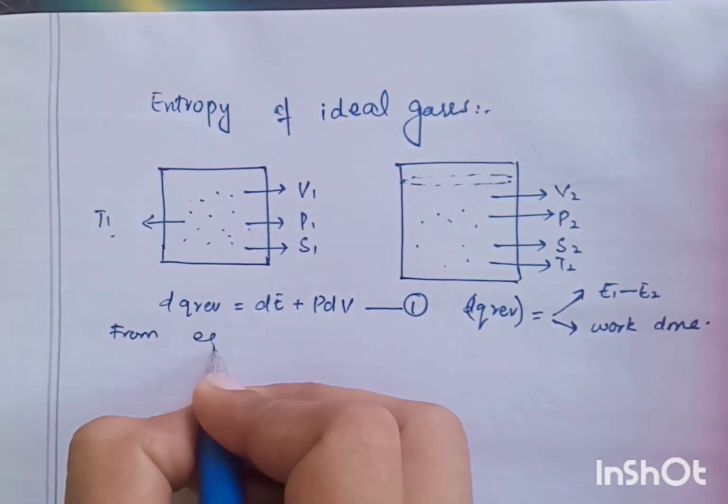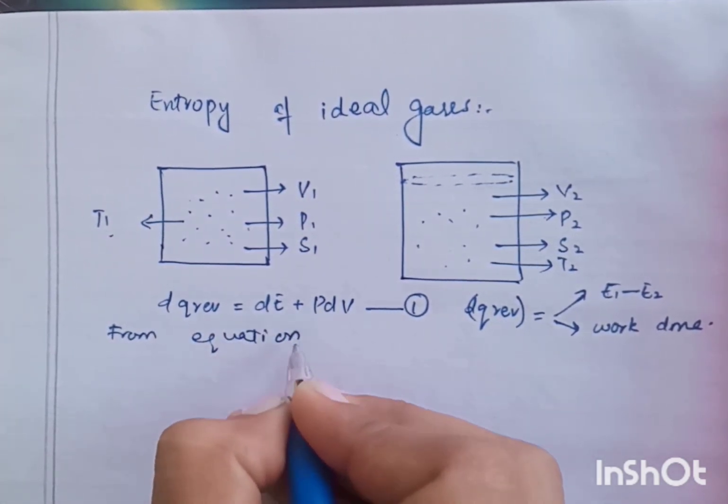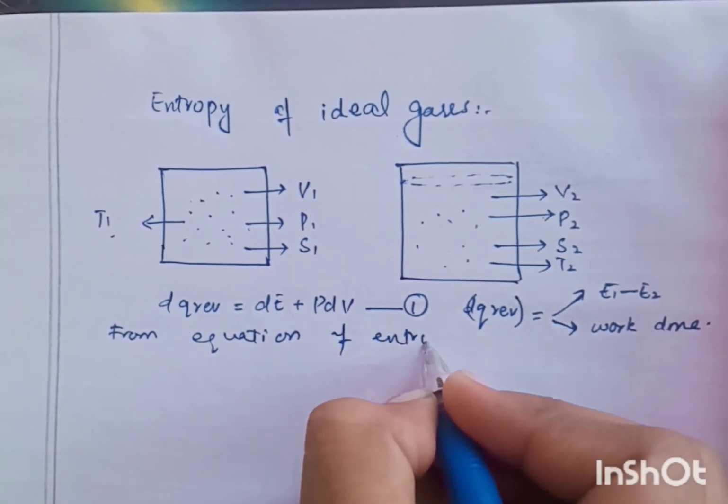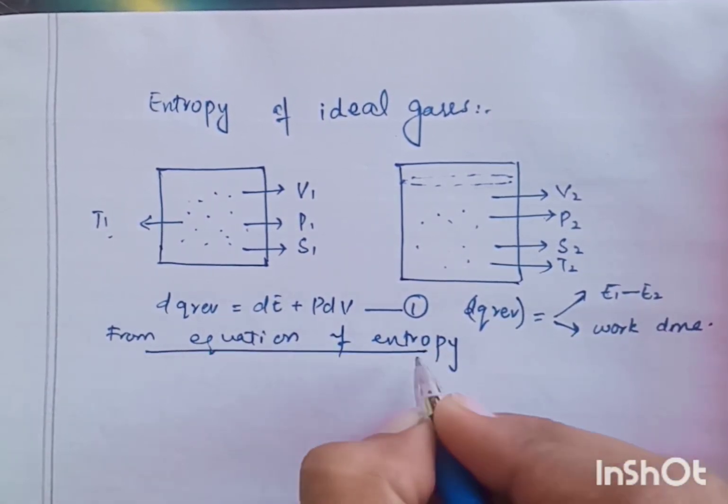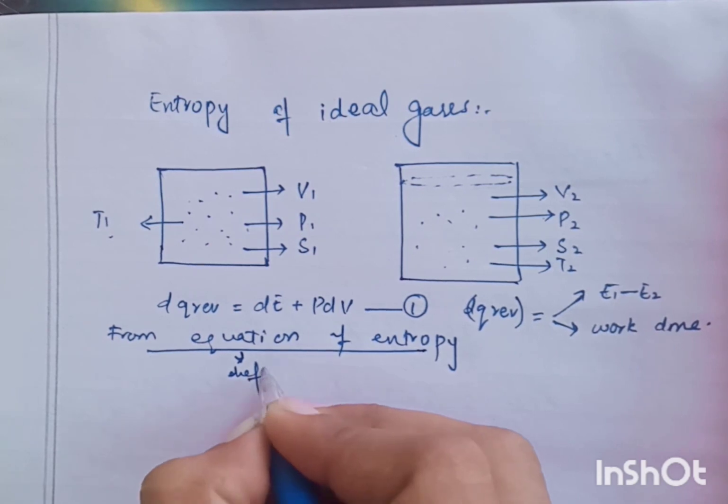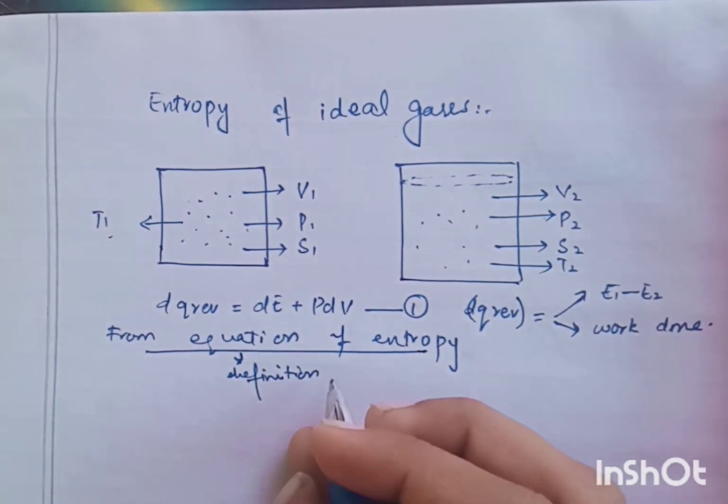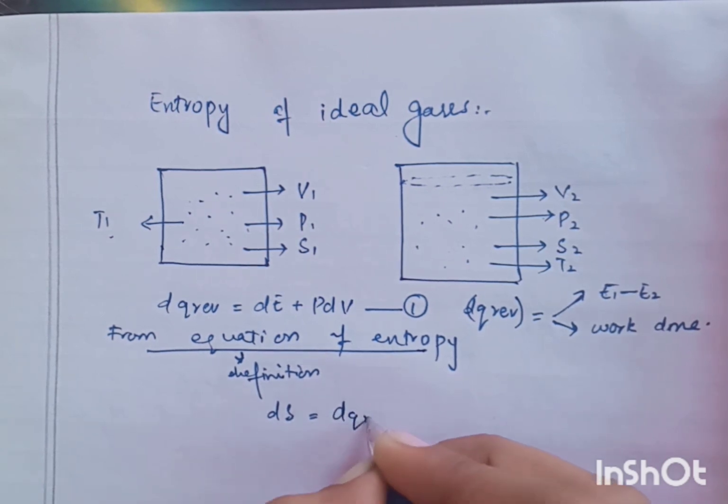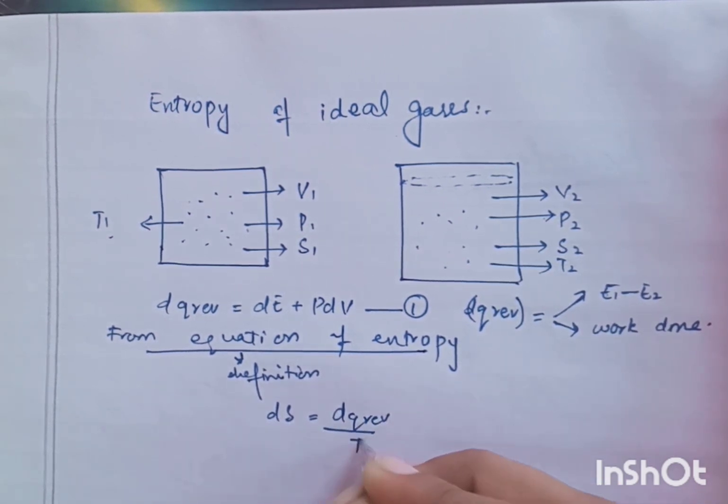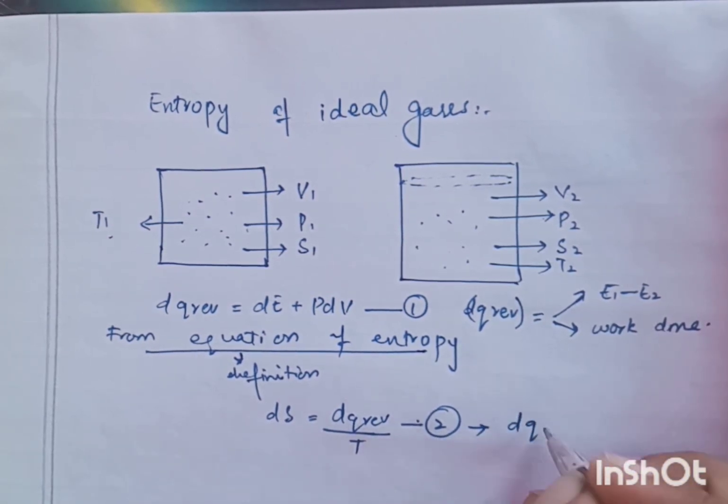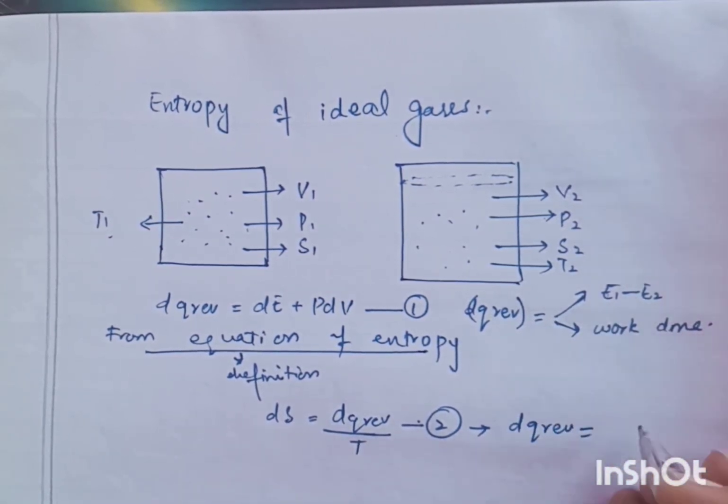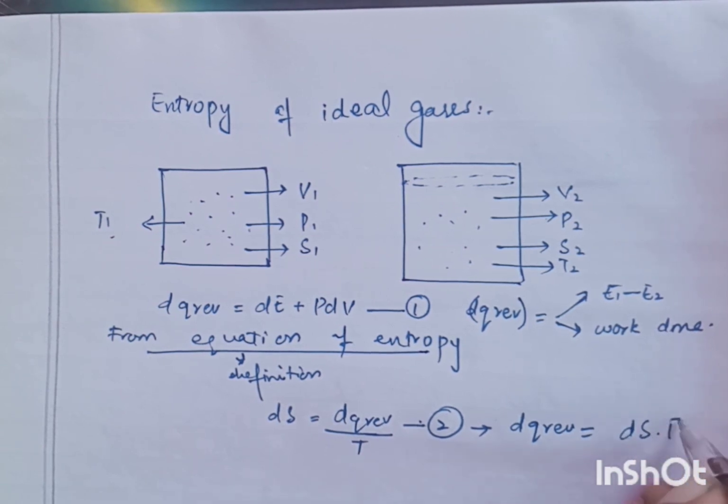From the definition of entropy, we know that DS equals to DQ reversible over T. This is equation number 2. If modified, then DQ reversible equals to DS into T, or T into DS equals to DQ reversible.